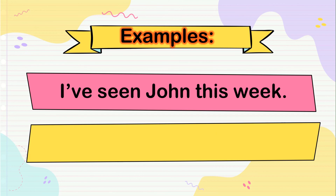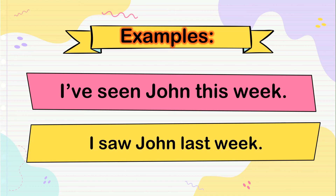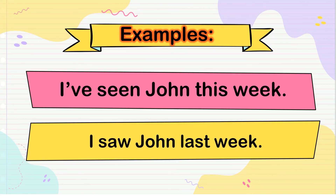'I've seen John this week' — with an unfinished time word like 'this week,' 'this month,' or 'today.' But 'I saw John last week' — with a finished time word like 'last week,' 'last month,' or 'yesterday' — those are expressions in the past. So 'I saw John last week' is a finished action.